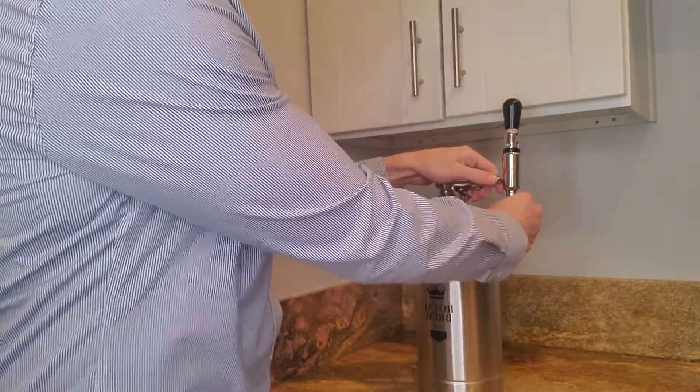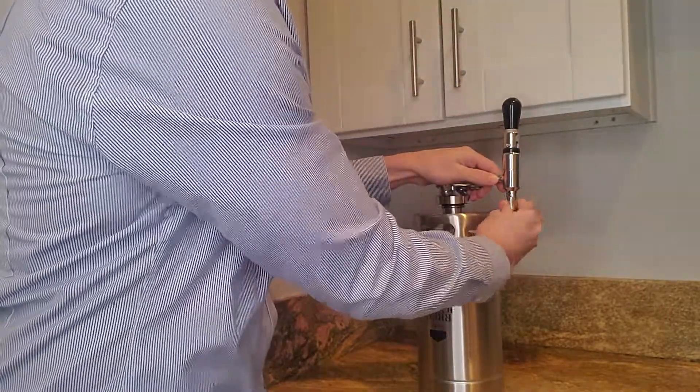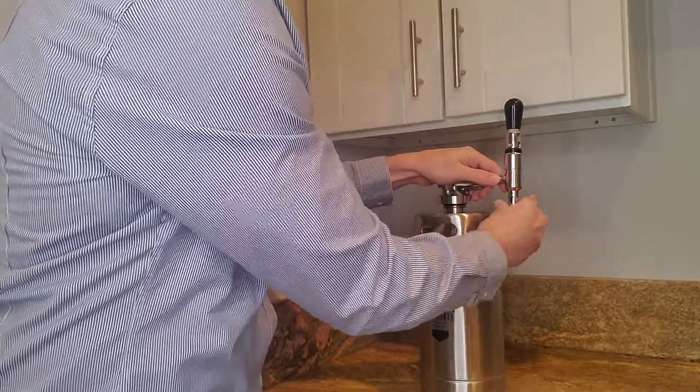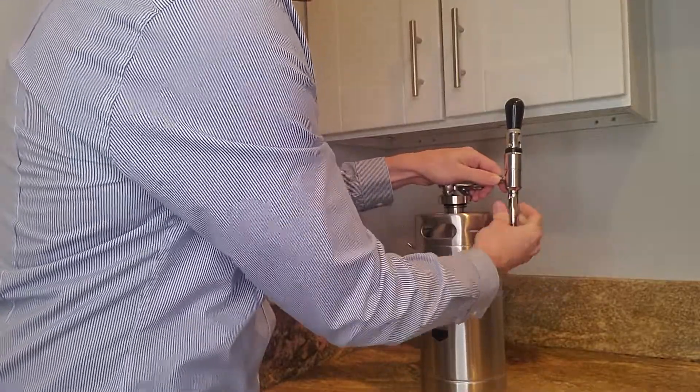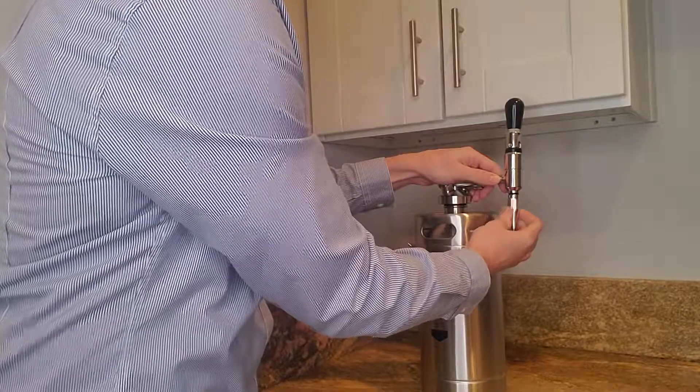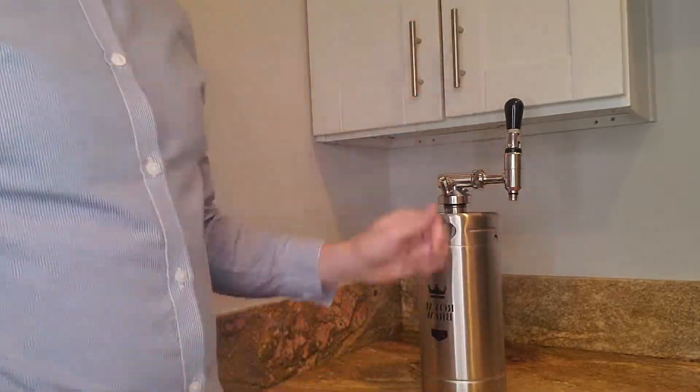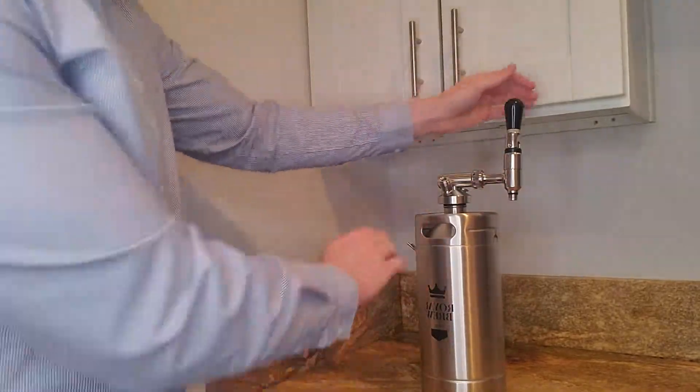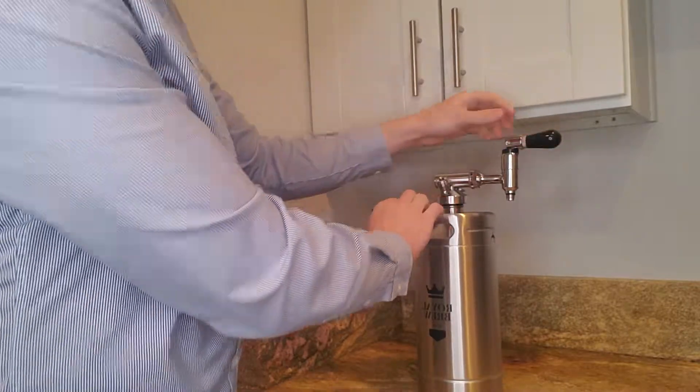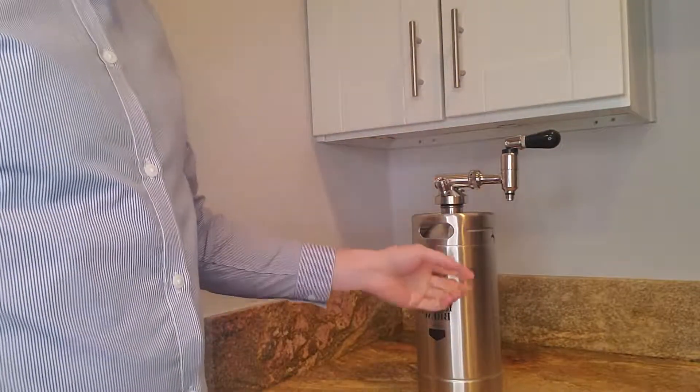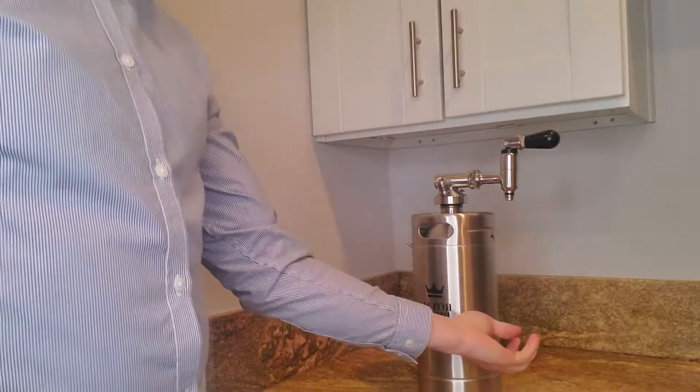So what you want to do is turn your faucet tip to the left—lefty-loosey, righty-tighty, just like they used to say. And then, if the keg was full, you're going to want to pull it forward and you have a cartridge in here too, right? And if it flows out...